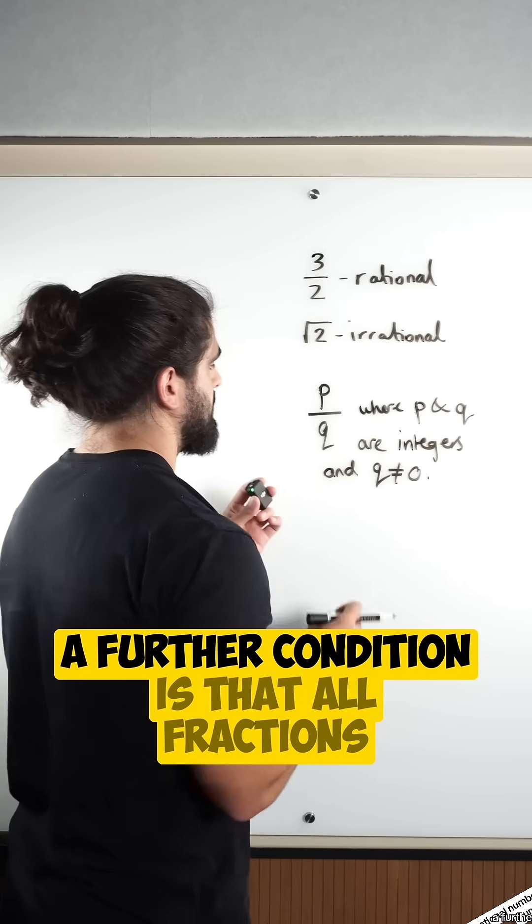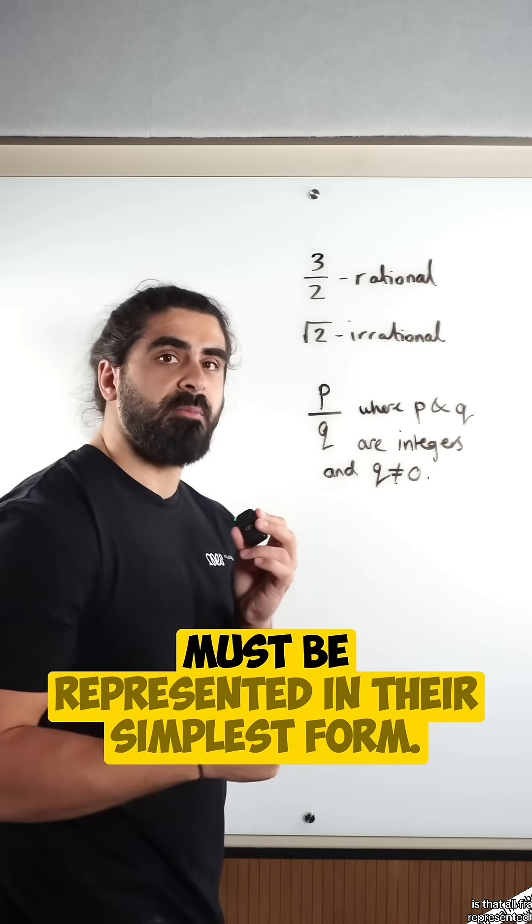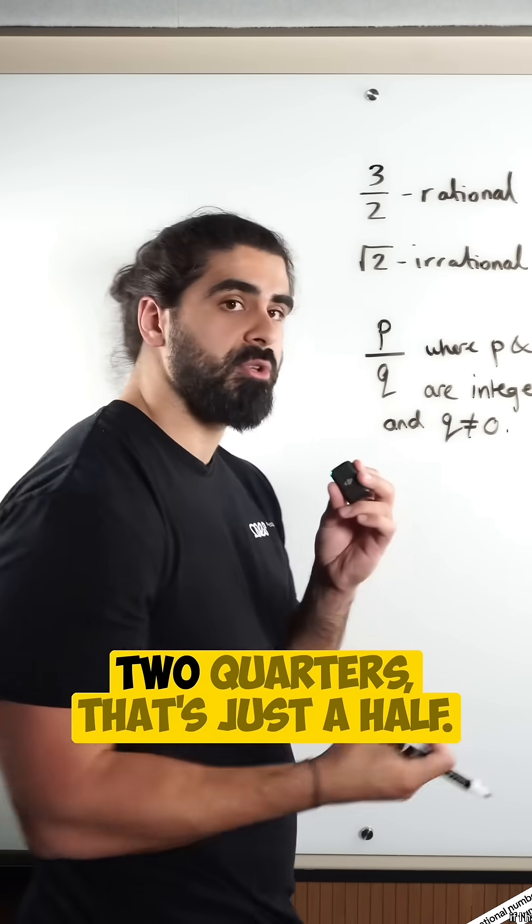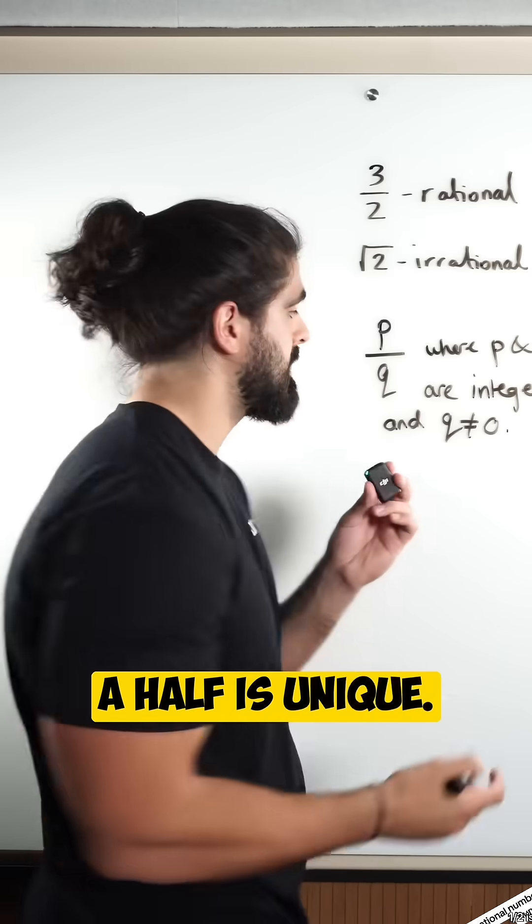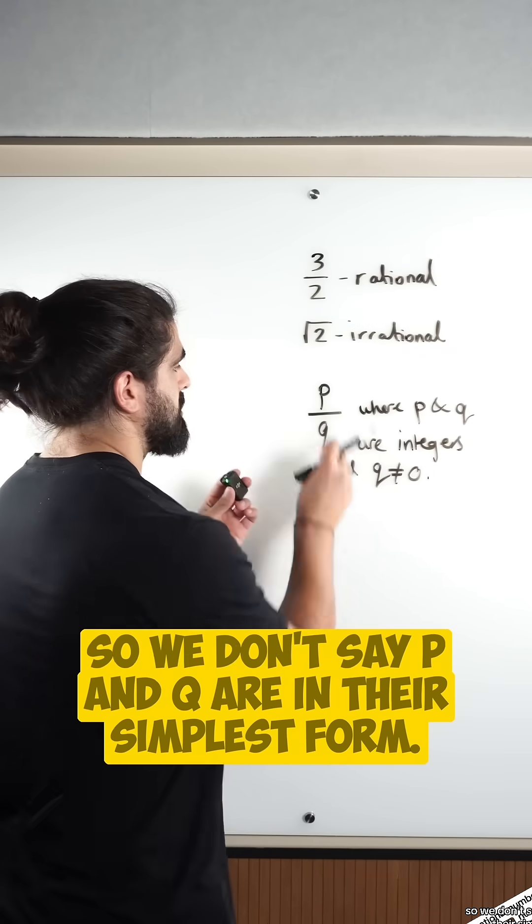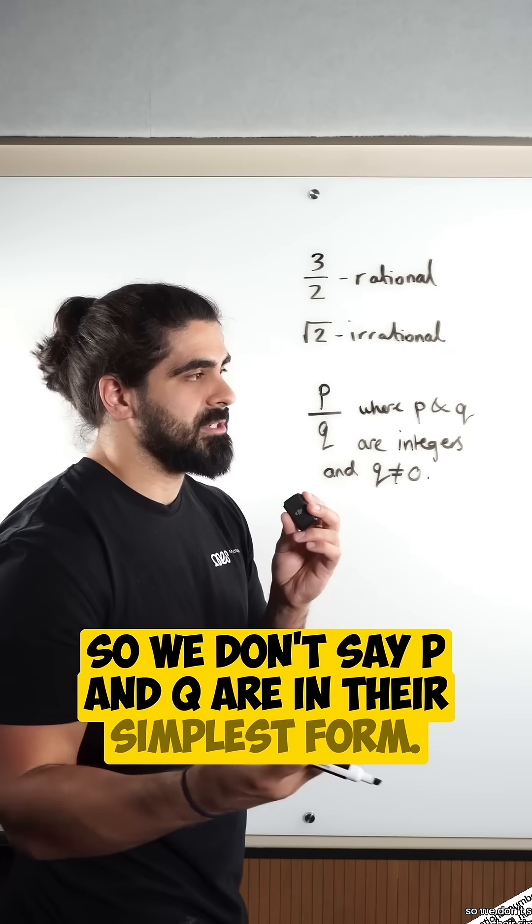A further condition is that all fractions must be represented in their simplest form. So, for example, if I had two quarters, that's just a half. A half is unique. So, there's a technical word for that. So, we don't say p and q are in their simplest form.